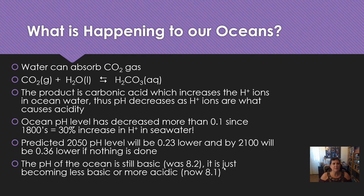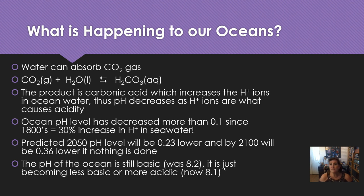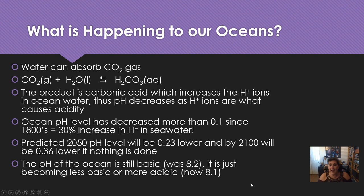What is happening to our oceans? It's the water absorbing the CO2 gas and making carbonic acid, which increases hydrogen ions in the water, so the pH goes down as we get more acidic. The ocean pH has gone down about 0.1 — that may not sound like much, but pH is a logarithmic scale, so since the 1800s we've had about a 30% increase in H+ ions in our oceans. Predicted by 2050, the pH will go down by 0.23; by 2100, we predict it'll go down by 0.36 if nothing is done. The ocean pH was 8.2 and has now gone down to 8.1.